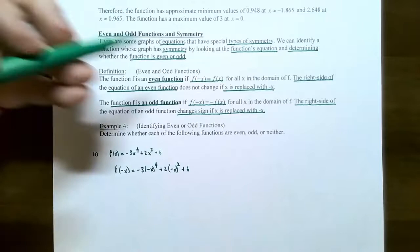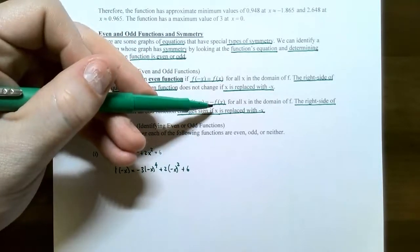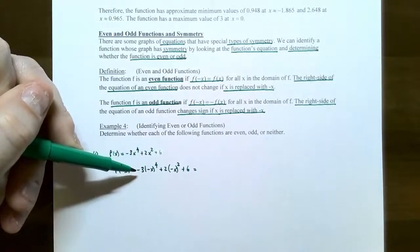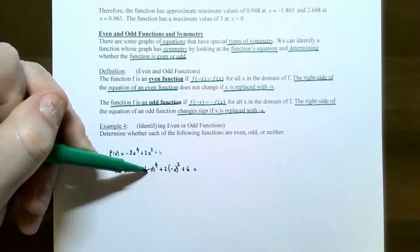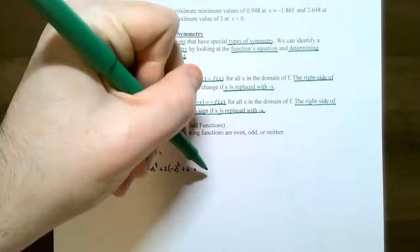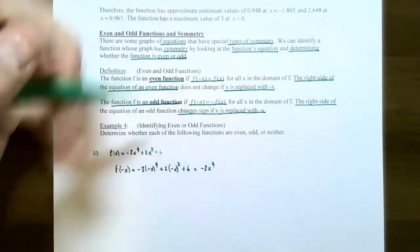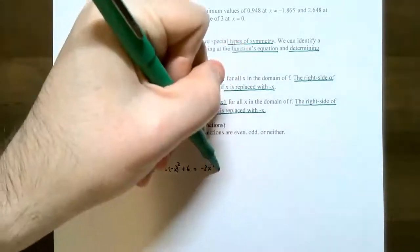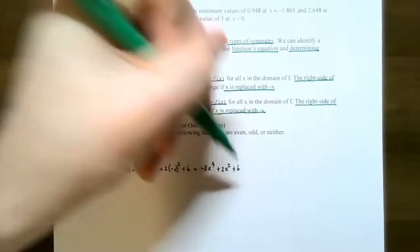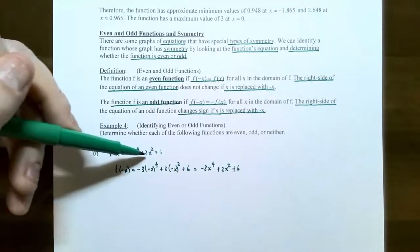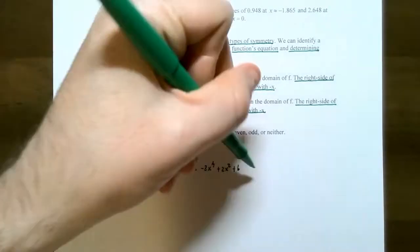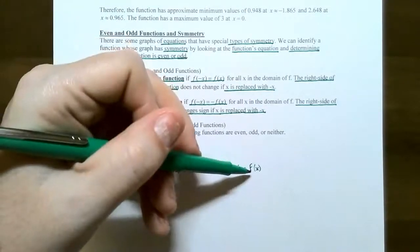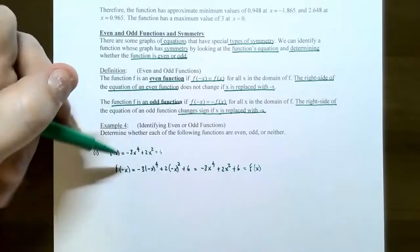To figure out whether the function stays the same or becomes the opposite, we need to simplify. Notice that (negative x) to the fourth gives four negatives, plus the negative on the outside — that still gives negative 3x⁴. Then (negative x)² gives two negatives, so positive 2x². We get -3x⁴ + 2x² + 6, which is the exact same function we had originally. Since replacing x with negative x gives the same function, f(x) is an even function.